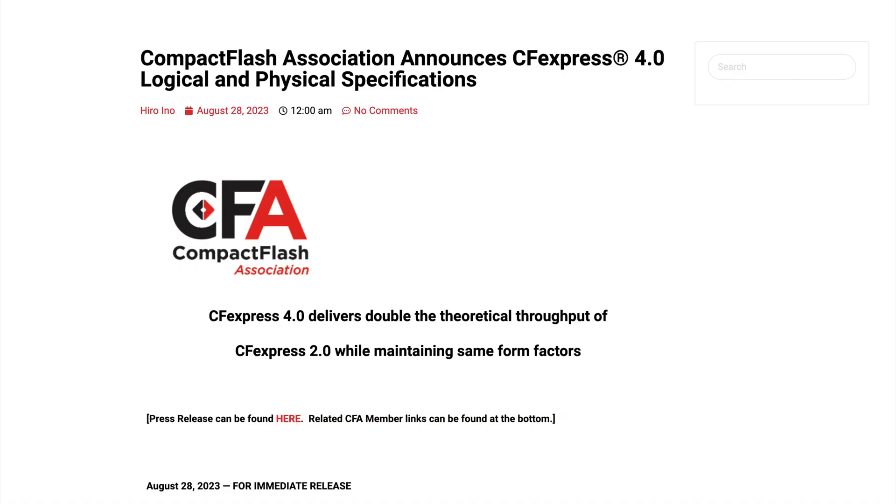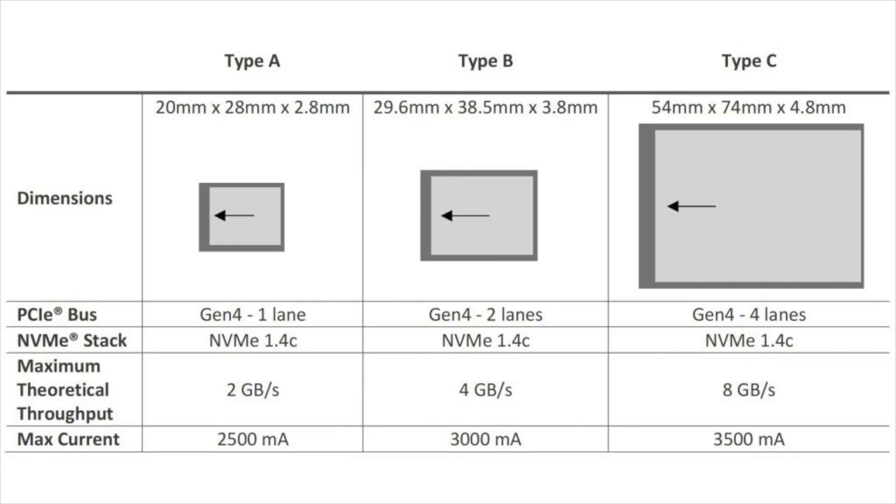The more important issue is that the Sony A9 III doesn't support the new 4.0 standard. It would have been nice to add this to the A9 III because it would have allowed doubling the writing speed. So if you had a new CF Express Type A card with the 4.0 standard, you would get a clear advantage — but this didn't make it into the A9 III. Petapixel says Sony should have known that standard was announced in August and should have implemented it.